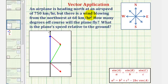An airplane is heading due north at an airspeed of 750 kilometers per hour, but there is a wind blowing from the northwest at 60 kilometers per hour. How many degrees off course will the plane fly, and what is the plane's speed relative to the ground?